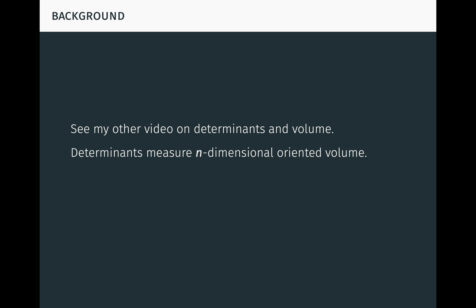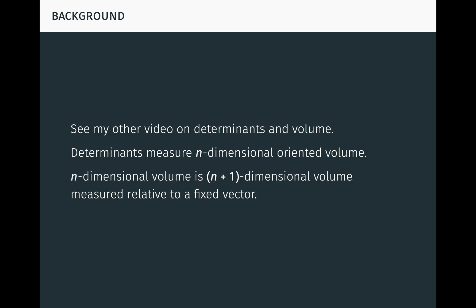In that video we saw that determinants measure n-dimensional oriented volume, at least over the real numbers, although this intuition is still useful in guiding us to correct results even in more general cases. We also discovered a fundamental relationship between n-dimensional volume and n-plus-1-dimensional volume, namely that n-dimensional volume is just n-plus-1-dimensional volume measured relative to a fixed vector. This simple geometric fact explains important properties of determinants.